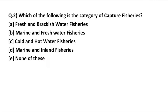The next question asks: which of the following is the category of captured fisheries? Fisheries can be categorized into two types — captured fisheries and culture fisheries. Captured fisheries refers to the exploitation of aquatic organisms in their natural environment, without stocking seeds — we simply capture them. Culture fisheries is the opposite: the cultivation of selected fishes in a confined area or environment.